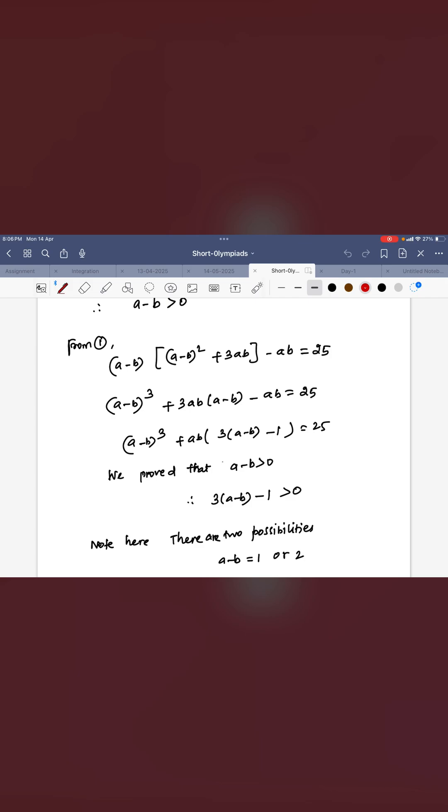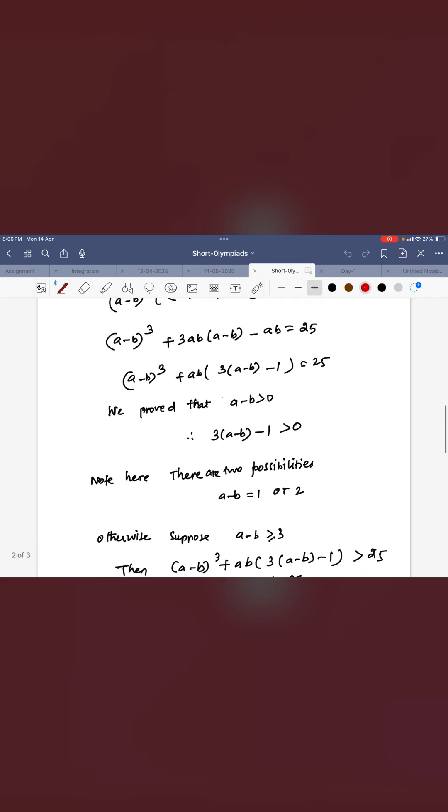Here A - B > 0. So therefore, 3(A - B) - 1 > 0. Just take the difference here. Definitely it is positive. There are two possibilities.